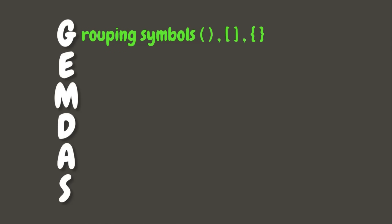Each letter stands for a specific rule. The first rule is the letter G, which stands for Grouping Symbols. This means that we need to perform first the operations inside grouping symbols such as parentheses and brackets.